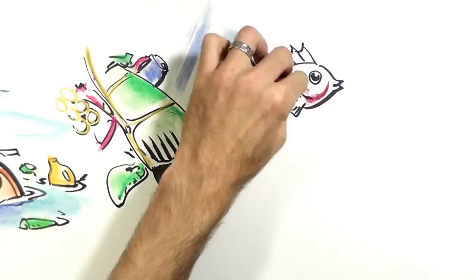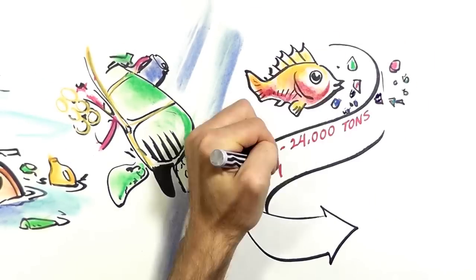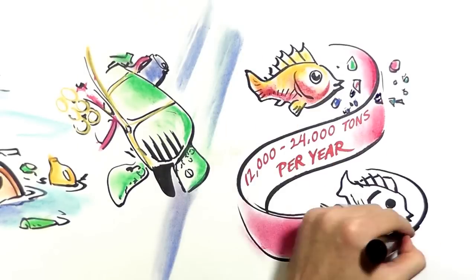Fish ingest plastic at a rate of roughly 12,000 to 24,000 tons per year. Fish that eat plastic may end up on our plates.